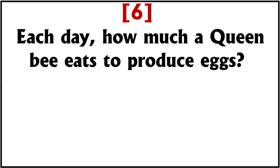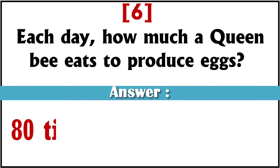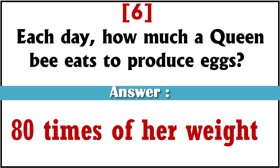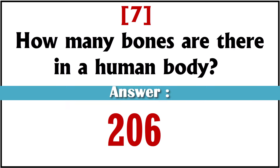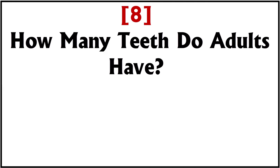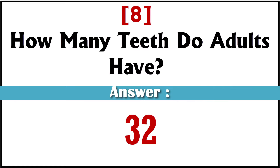Each day, how much does a queen bee eat to produce eggs? Answer: 80 times of her weight. How many bones are there in a human body? Answer: 206. How many teeth do adults have? Answer: 32.